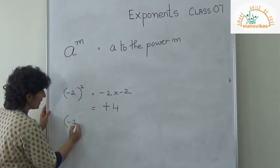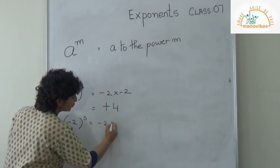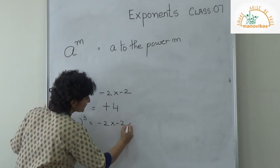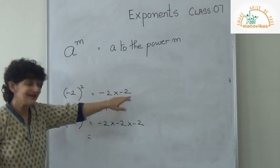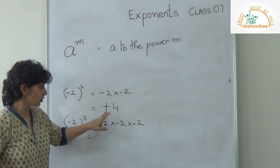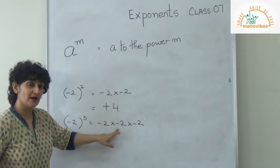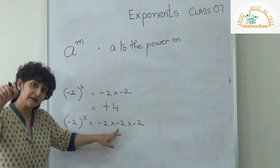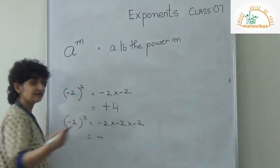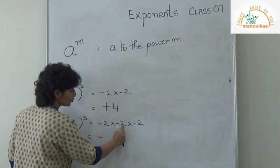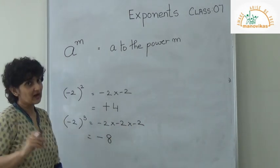Similarly, if I have minus 2 cubed: minus 2 into minus 2 into minus 2. Since the exponent is odd — I have 3 here — minus into minus gives plus, but plus into minus gives minus. So the answer is negative: minus 8. Because 2 twos are 4, and 4 twos are 8.